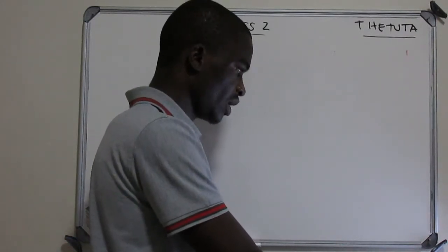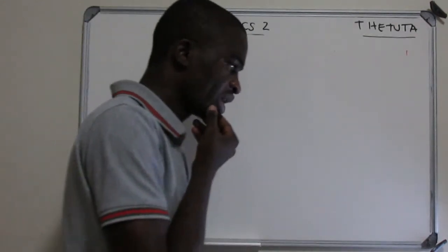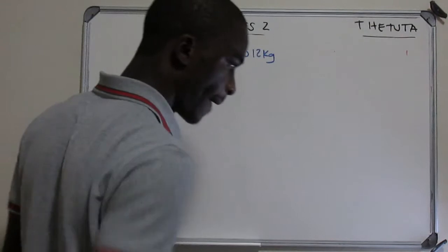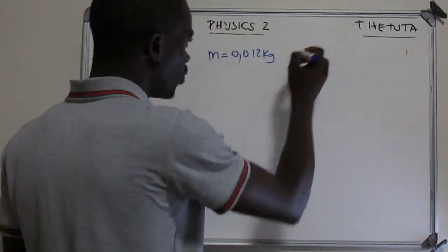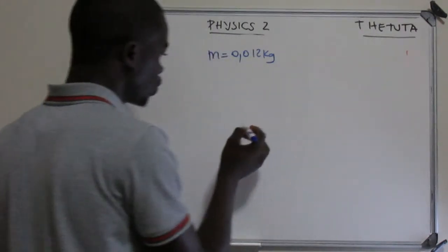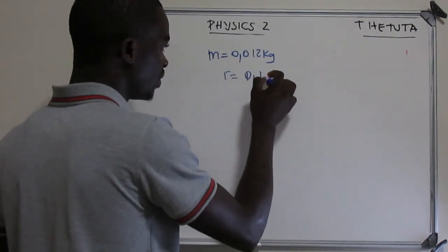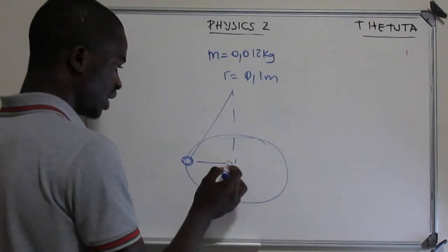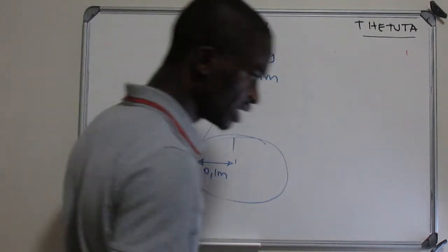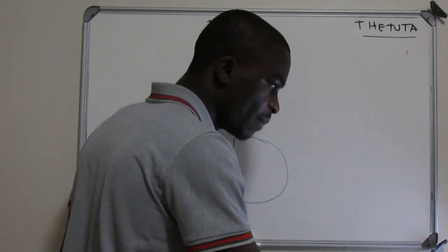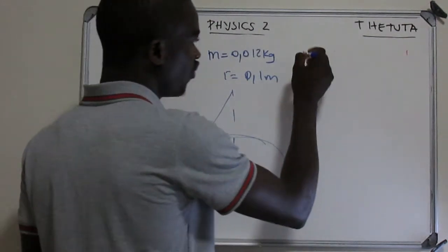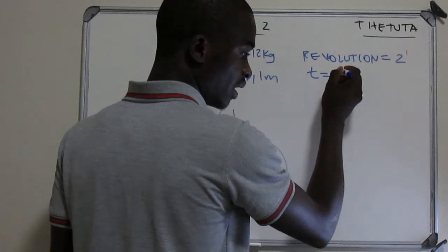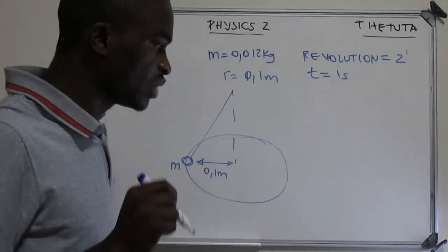On question two, we have a child swinging a ball of a specific mass which is 0.012 kilograms on the horizontal plane. The radius is given as 0.1 meters — the child is swinging the ball in a circular form. They say the ball travels twice around per second, so the revolution is two and the time is one second. The question asks us to determine the centripetal force acting on the ball.